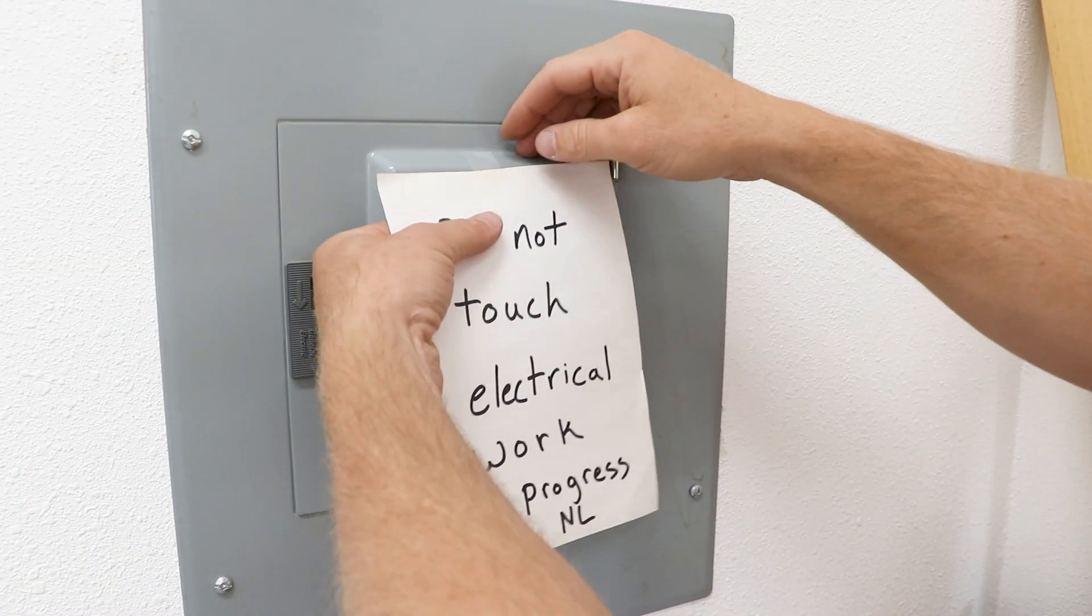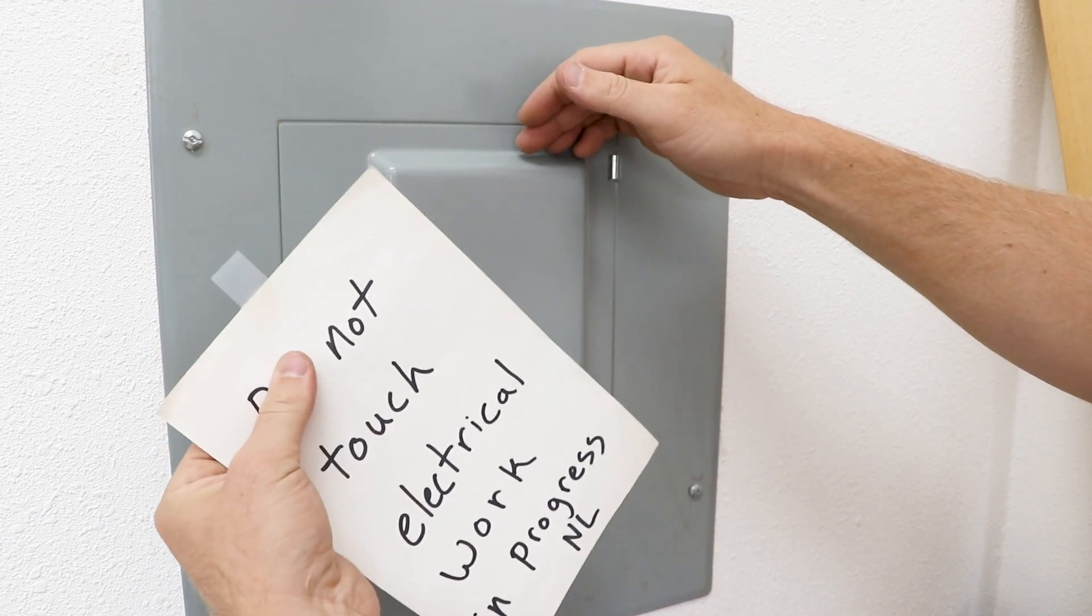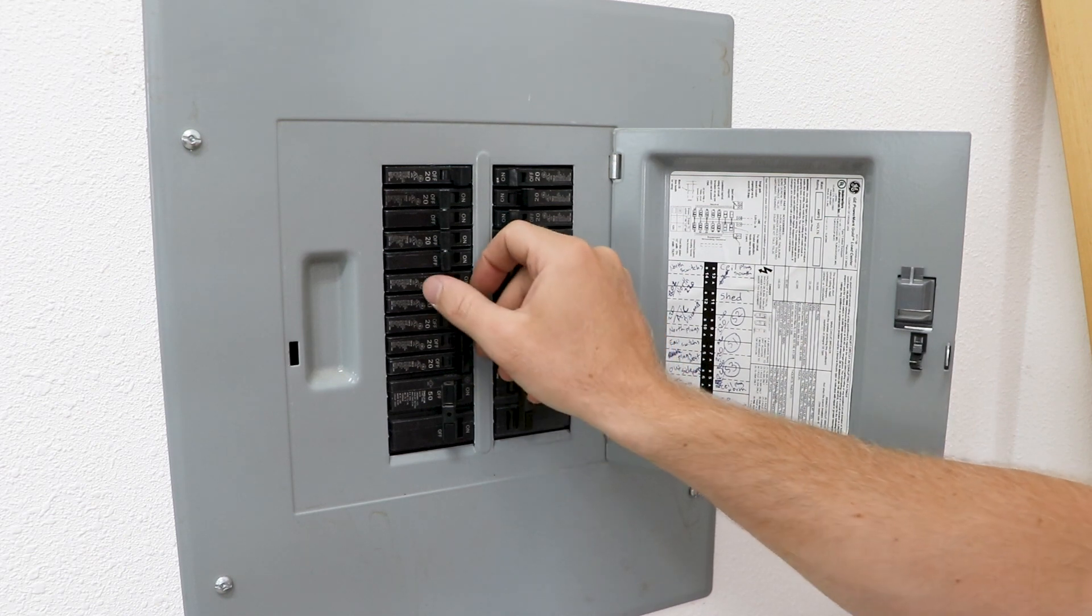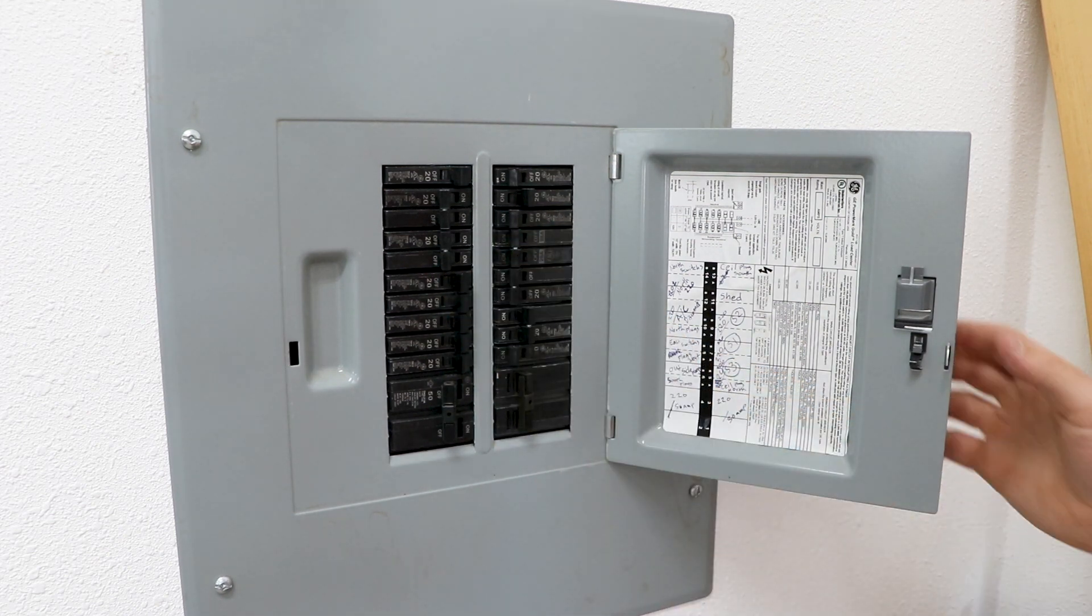Taking down your notice is really important because you want people to be able to trust them. So you don't want to leave this up. So we're going to take it down and we're going to flip our breaker on. Make sure it's the right one. And then close it up.